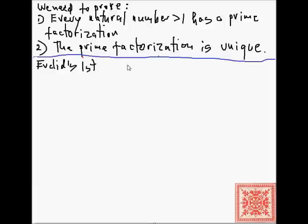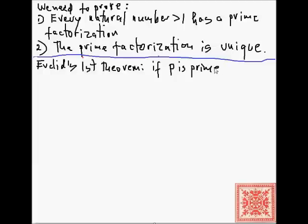Let's remind ourselves of Euclid's first theorem, which states that if p is a prime and p divides a product a times b, then p divides a or p divides b.